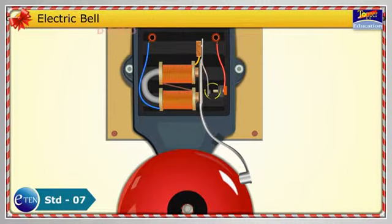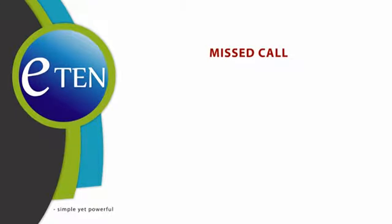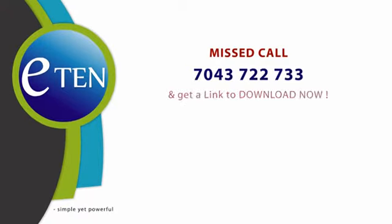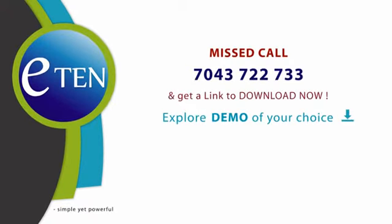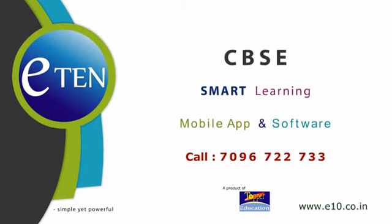To explore more content for conceptual clarity, give a missed call on 7043-722-733 and get a link to download now. Eaton, simple yet powerful. To know more, call on 7096-722-733. Act now.